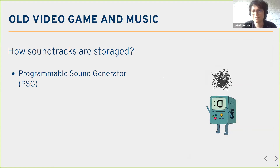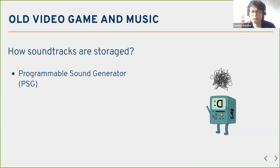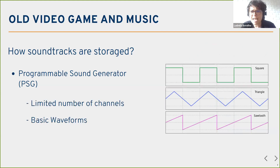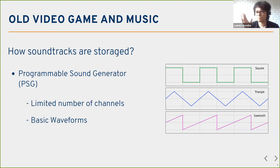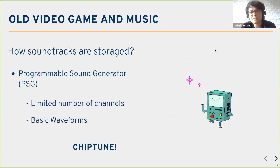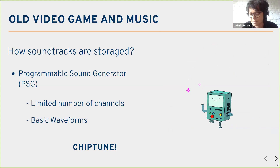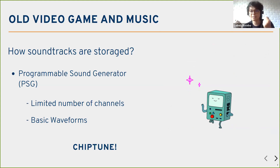Atari or Super Nintendo — those devices had a dedicated chipset just to do this, which is a programmable sound generator. It was very simple. The number of channels was limited to about four or five, depending on the generation. The shapes of the sound were also very simplified, like triangle waveforms. This is not exactly a problem — it's a feature. Because of this, we have this new generation of music sampling called Chiptune, which emulates this kind of sound.